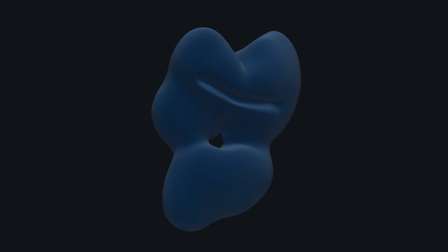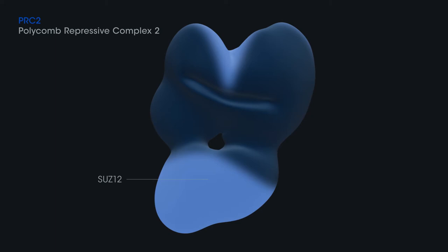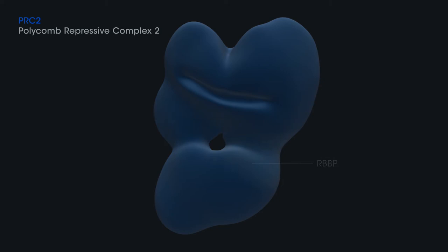The core PRC2 polycomb complex includes a histone methyltransferase subunit EZH2, which works together with SUZ12, EED, and the histone binding proteins RBBP.